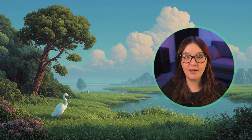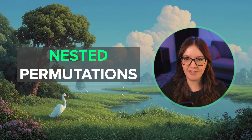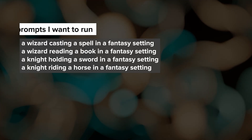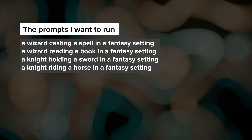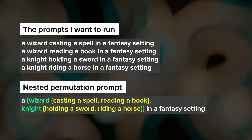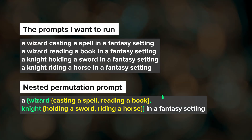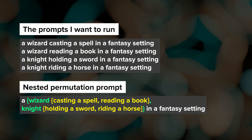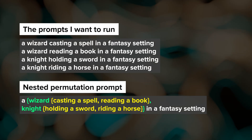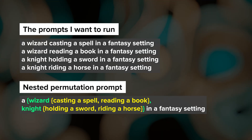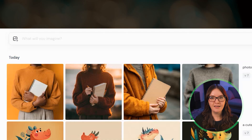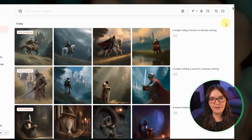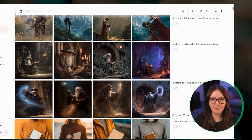Last permutations example: nested permutations. This is where you place curly brackets inside of other curly brackets to create even more complex combinations. Say I want to run prompts of different characters in different scenes. I've color-coded the text and brackets to make it easier to follow. This permutation creates four prompts — everything outside of the outermost curly brackets gets included with every prompt. Within the first set we have a wizard and a knight, and nested within each character are specific poses. Nested permutations can get complicated quickly, so start simple and build up. Make sure you're closing all your brackets properly or Midjourney won't know where one permutation ends and another begins.